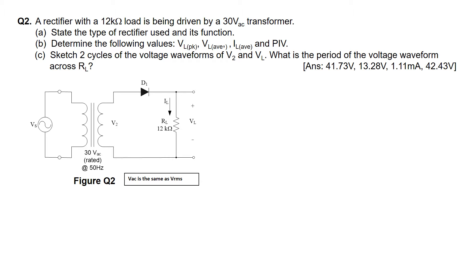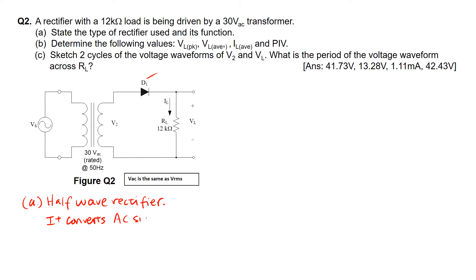In Question 2, we are given a rectifier with a 12 kΩ load being driven by a 30V AC transformer. In part A, we are to state the type of rectifier used as well as its function. Looking at Figure Q2, since there is only one diode D1 in the rectifier system, this type of rectifier is a half-wave rectifier. Its function is that it converts an AC signal to pulsating DC form.